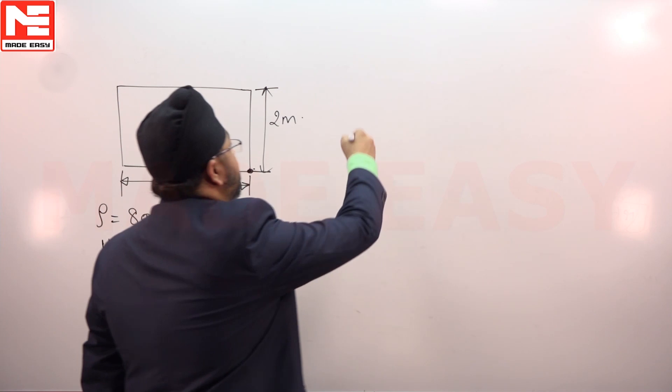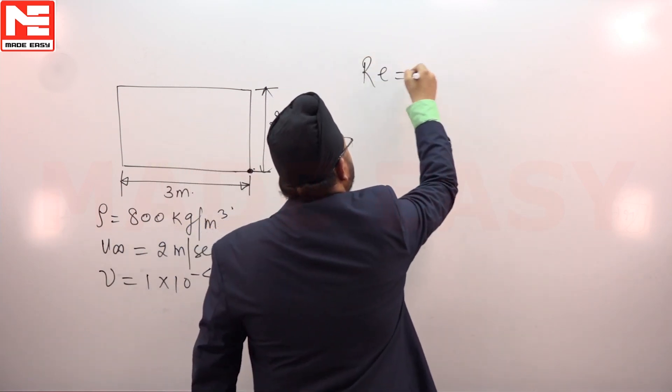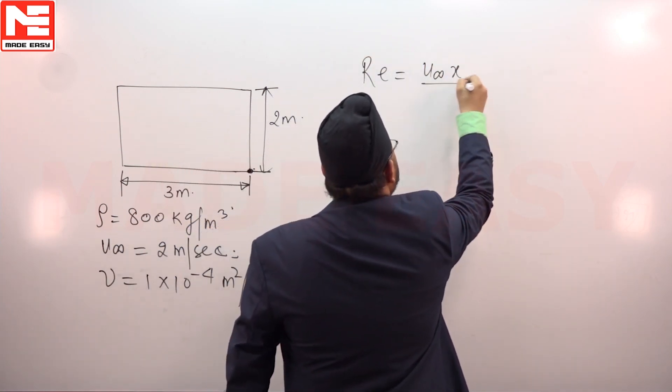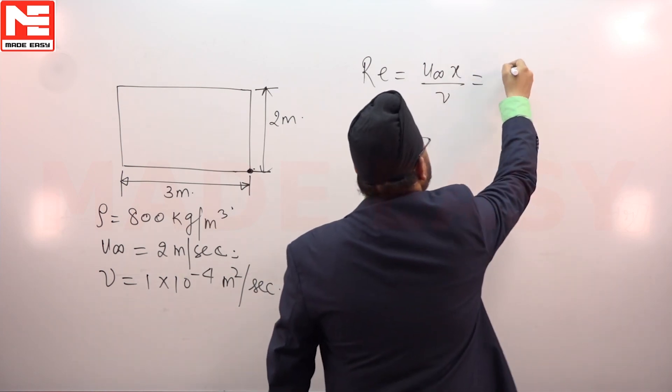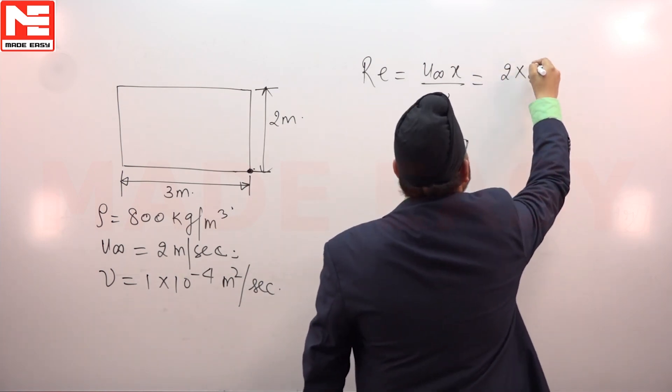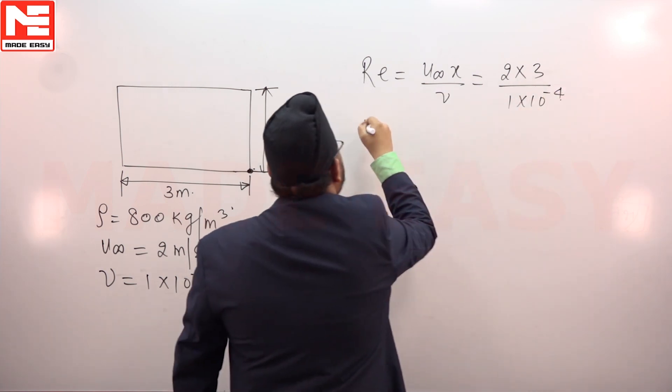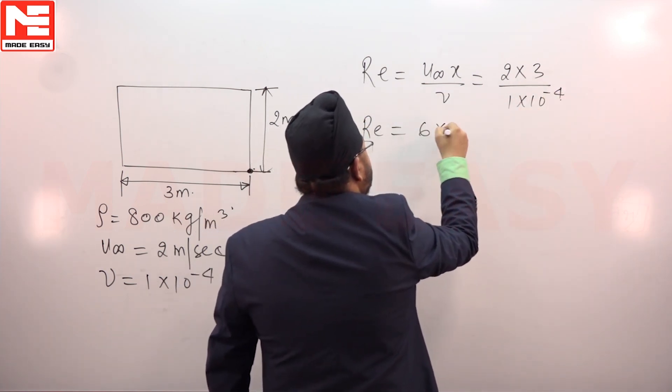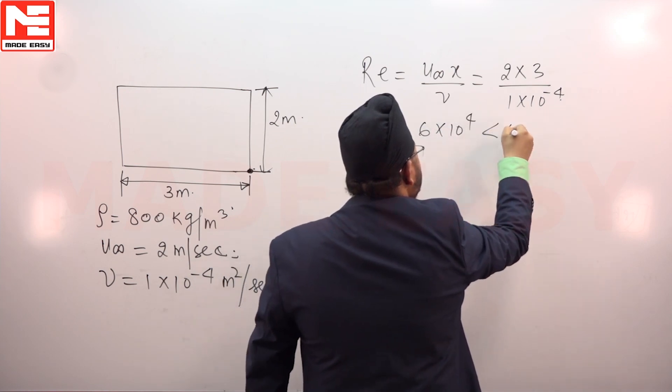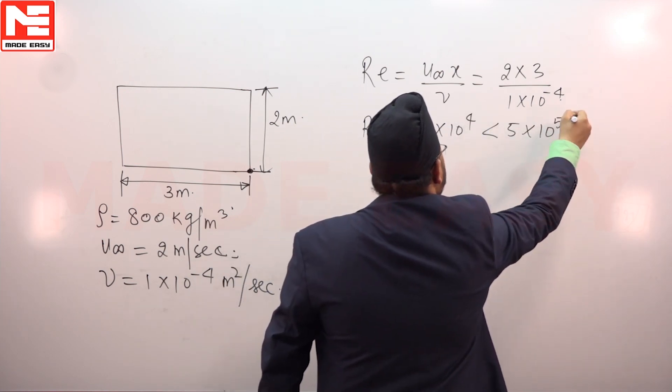Reynolds number is u infinity x by nu. u infinity is 2, x is 3, nu is 1×10^-4. So Reynolds number will be equal to 6×10^4 which is less than 5×10^5. So flow is laminar.